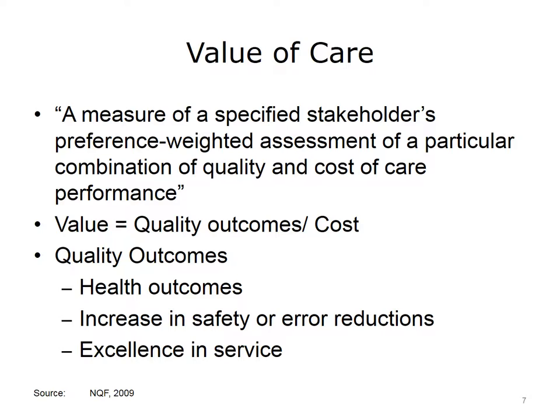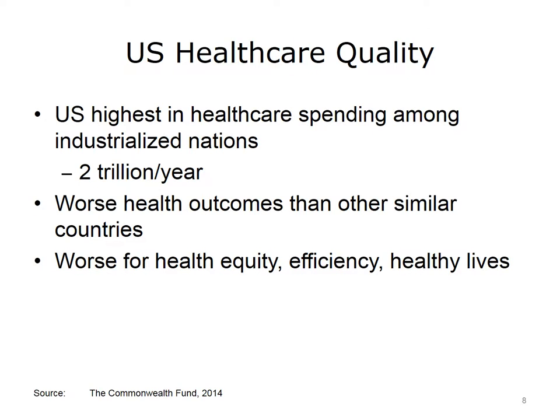Value and value-based care is becoming one of the most emphasized goals in health care. In the U.S., there are puzzling results related to the pursuit of quality. The United States spends approximately $2 trillion a year on health care — approximately 16% of the gross national product, or $8,508 per person per year, the highest in the world. Yet among the leading nations of the world — Britain and Canada, for example — health outcomes are poor in our country. The overall score for health care outcomes in the United States is 11th out of 11 nations. We're also the worst nation for health equity, efficiency, and healthy lives.